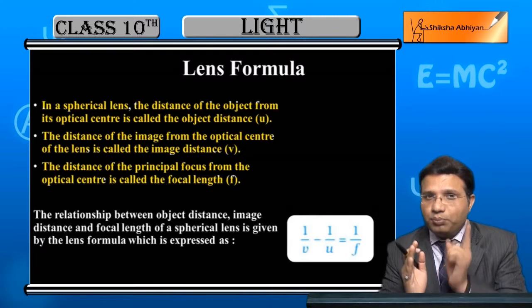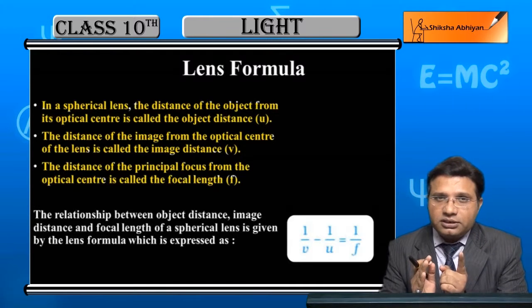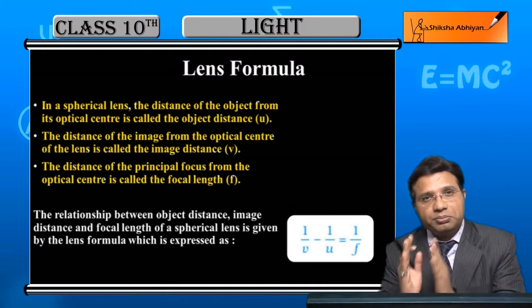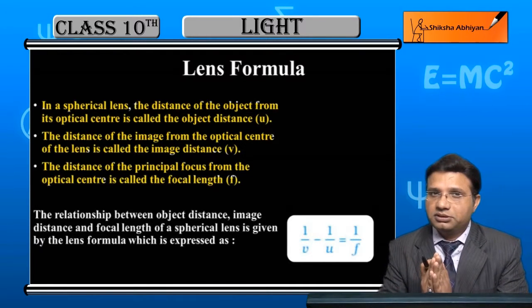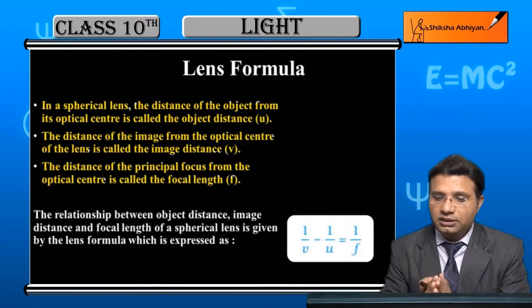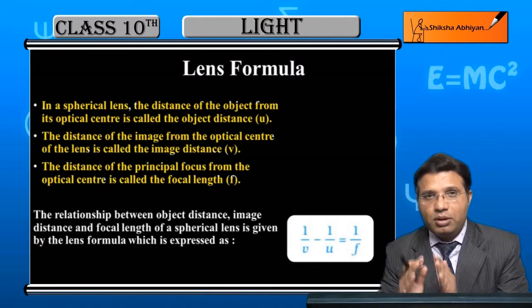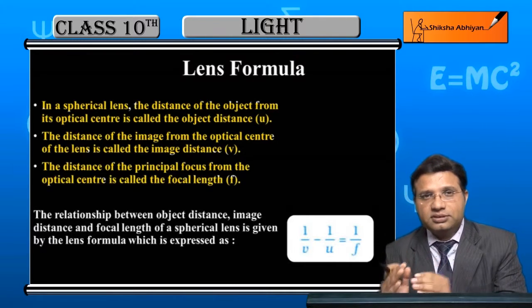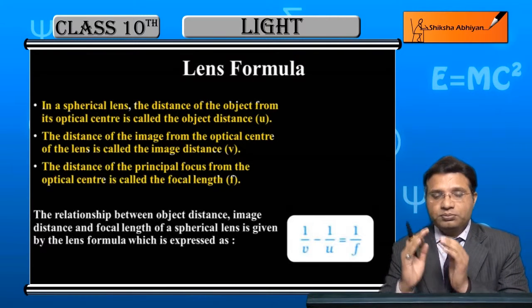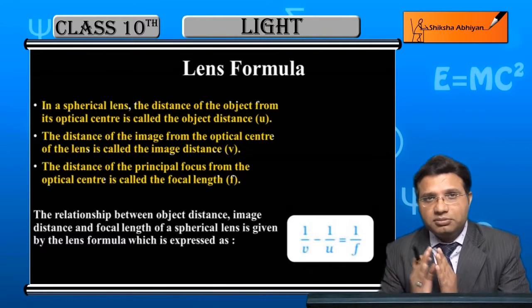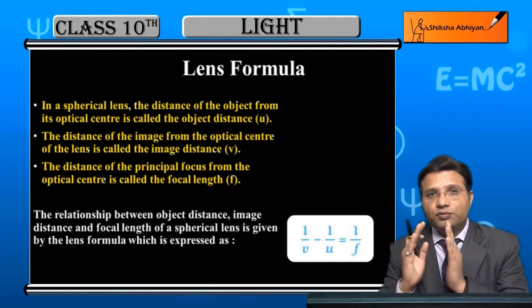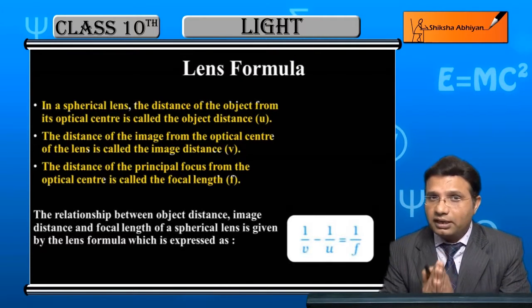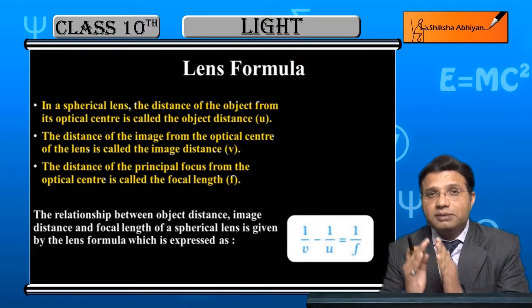फरक क्या है? Mirror में poles से measure करते हैं, जबकि lens में हम optical center से measure करते हैं। इस तरह object distance मिला u, image distance मिला v, और focal length मिला f।